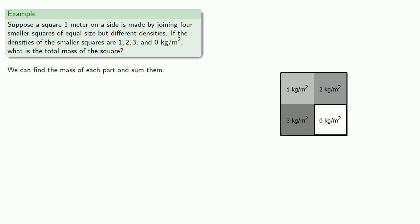To do that, we'll take each of our four parts, find its area, find the density, multiply them to get the mass, and add everything up.